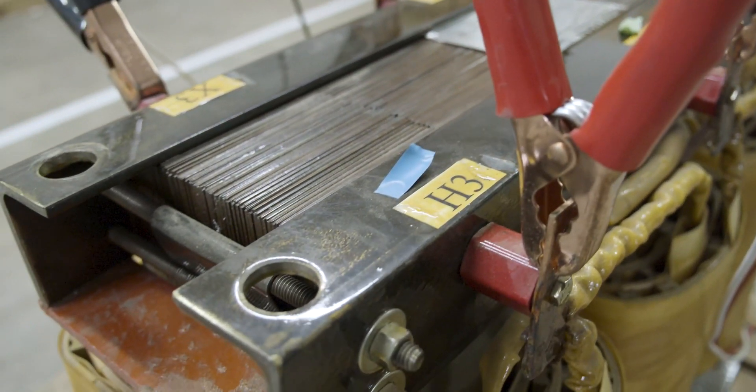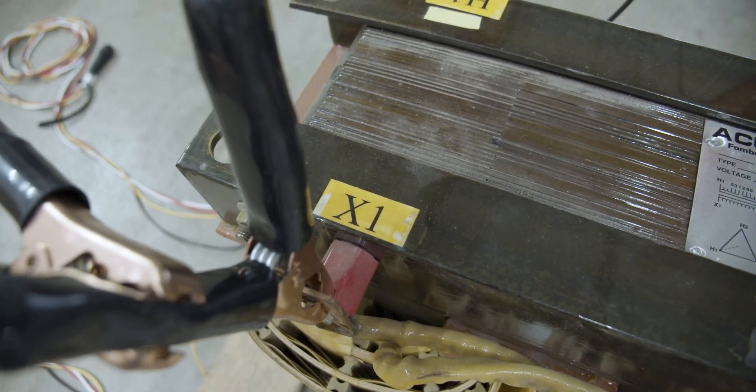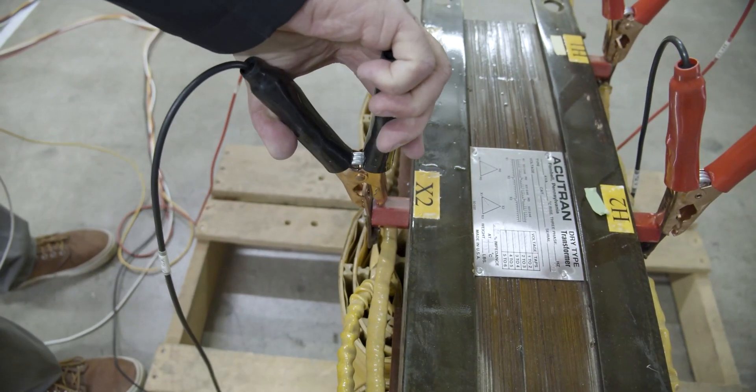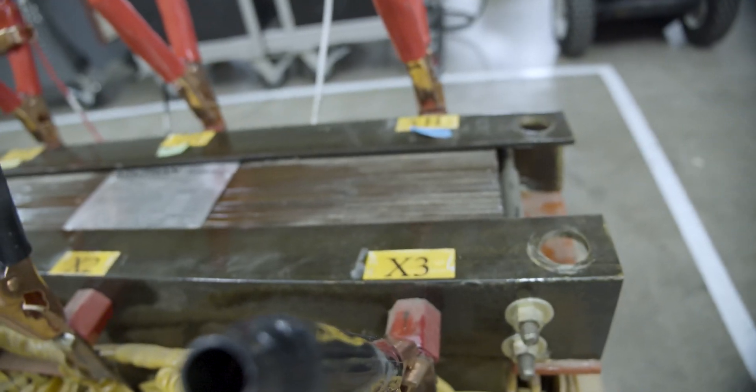Now we're going to do the same thing on the secondary side of the transformer. You notice X1 was connected to the corresponding terminal. This is the X2 lead and then the X3 lead being connected to the X3 terminal.